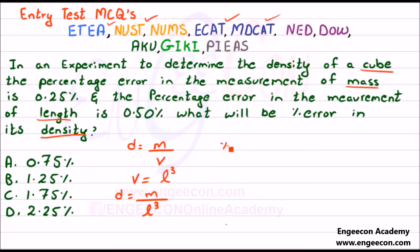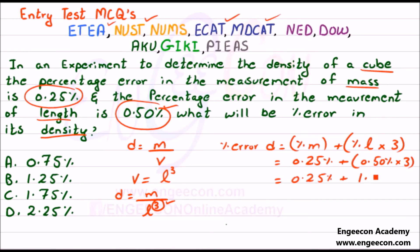We can write a general formula for the percentage error in density equals percentage error in mass plus percentage error in length multiplied by this power 3. So the percentage error in mass is 0.25% plus percentage error in length 0.50% multiplied by 3, which equals 1.50%. So the percentage error in density equals 1.75%.